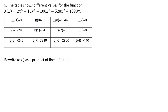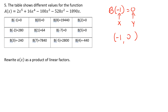The table shows different values for the function. So we have this big function up here and then a table showing a whole bunch of different values. A better way to describe these values is as coordinates — these are points. Remember, when you look at something like f(x): what's inside the parentheses is the x, and what it equals is the y. So in reality, that is a point — for example, negative 1 comma 0. So I'm going to go ahead and convert these all into actual points so they're easier to see.